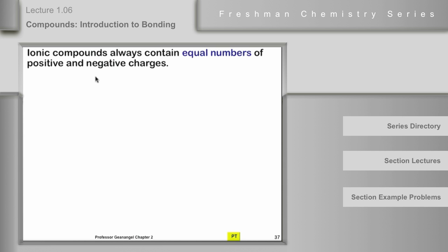NaCl, could be calcium bromide CaBr2, will be neutral. It won't have any charge on it overall. The positive charges will balance the negative charges, so it will be neutral.